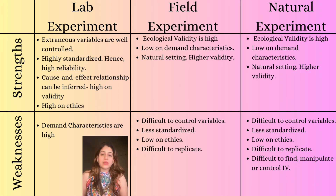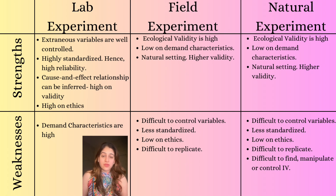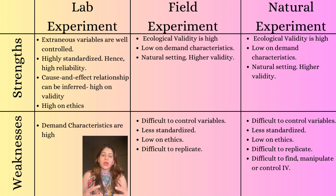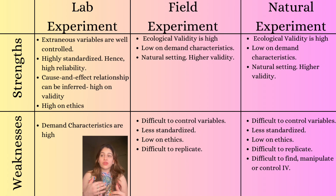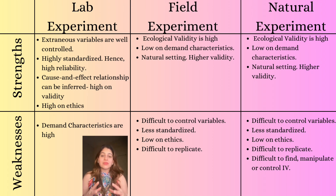The weakness of lab experiment is that it is usually high on demand characteristics. Demand characteristics means getting a hint of what the experiment is about. When I am calling participants to my study, they already know they are part of a study. They might get a hint — maybe this setup means she wants to observe this particular thing. Once they get a hint, they might try to fake, pretend, or alter their behavior. When they change their behavior, the results that come in are untrue, which makes the study low on validity.